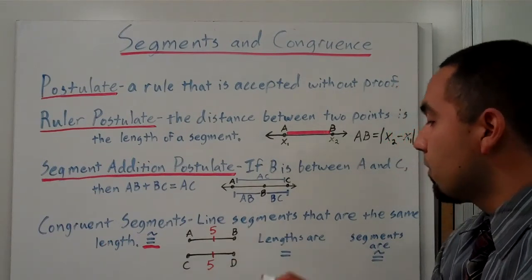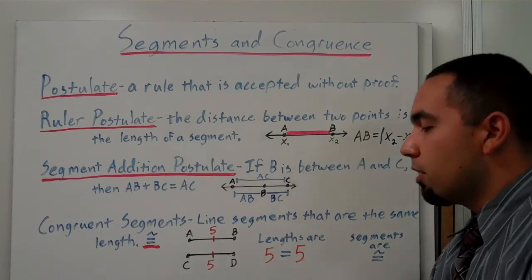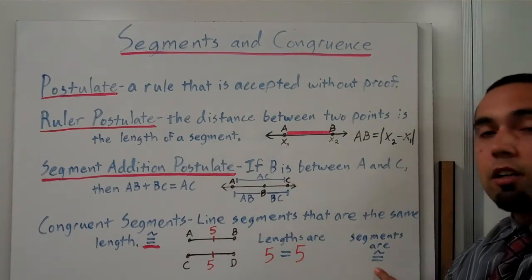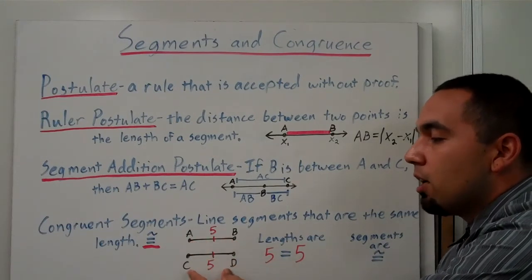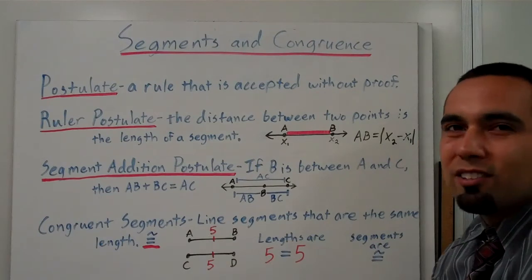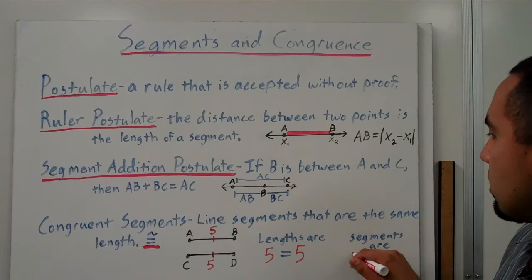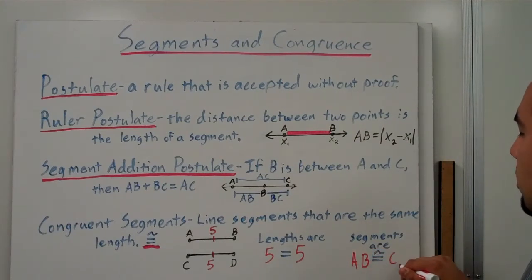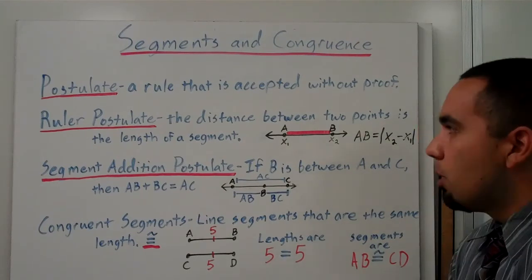So whenever we have numbers or lengths, those can always be equal. But segments are congruent, so we can't say that segment AB is equal to CD because they're not equal - they're different things. So here we would write it as AB is congruent to CD. All right, so let's look at some example problems.